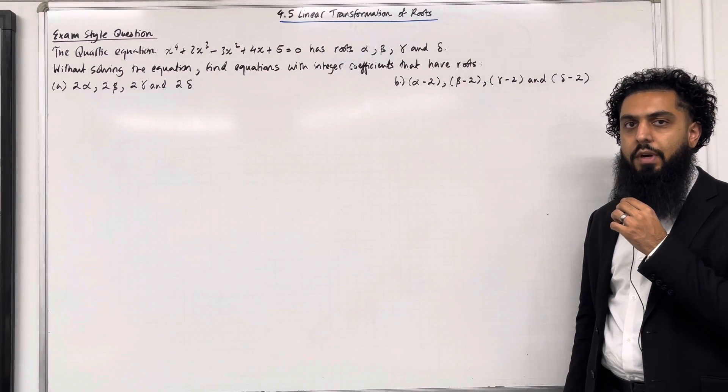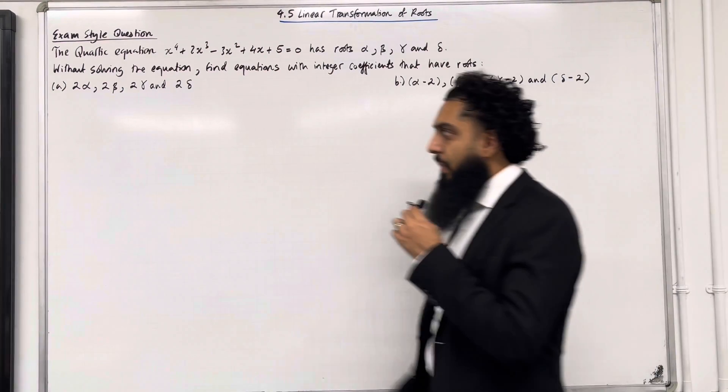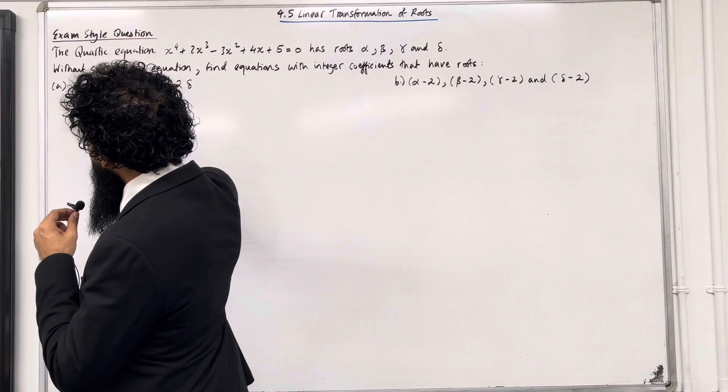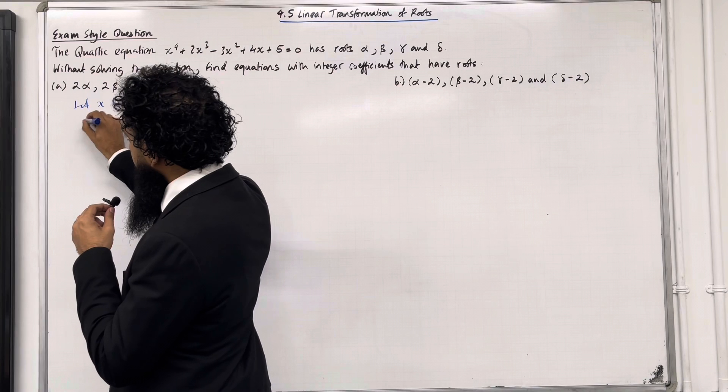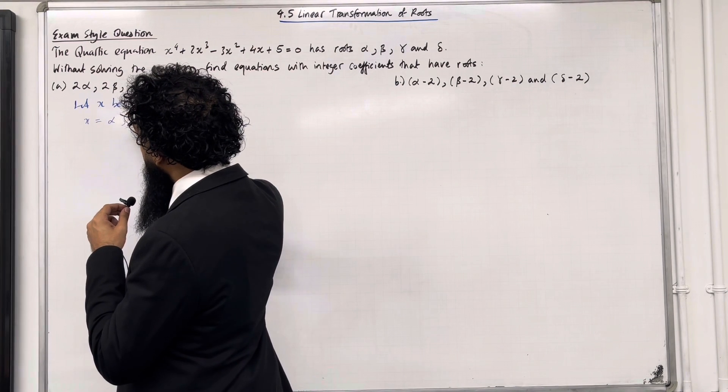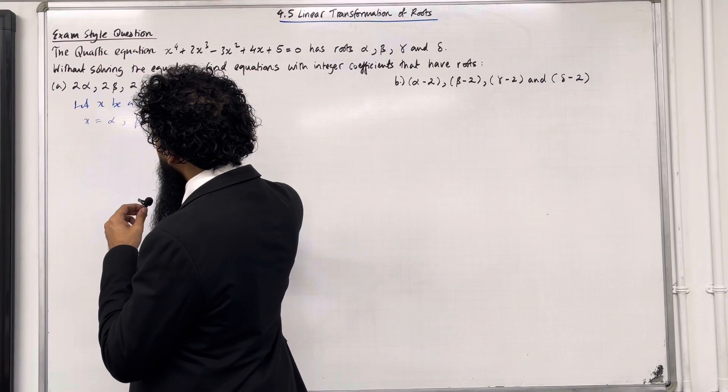Let's have a look at the solution to part A. Now I'm going to start by writing, let x be a root. So x can equal α, β, γ or δ.